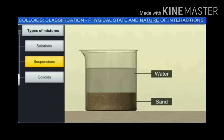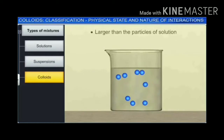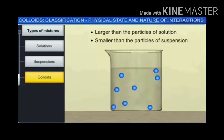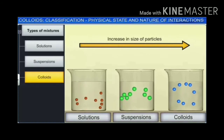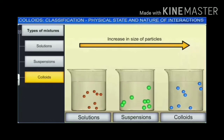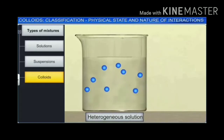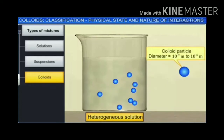Colloids are mixtures whose particles are larger than the particles of a solution but smaller than the particles of a suspension. The suspended particles in a colloid are small enough that they do not settle down due to gravity. Thus, a colloid is a heterogeneous solution in which the particle size ranges from 10⁻⁹ to 10⁻⁶ meters. These particles are not visible to the naked eye but can be seen under a microscope.